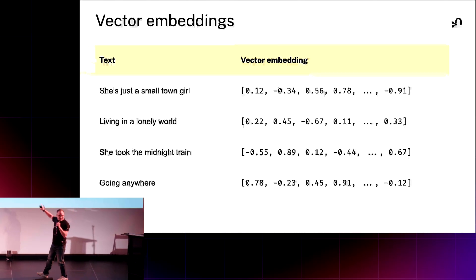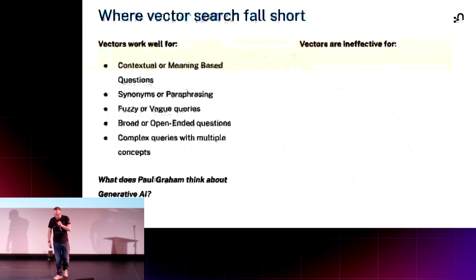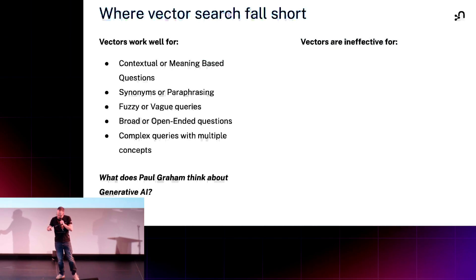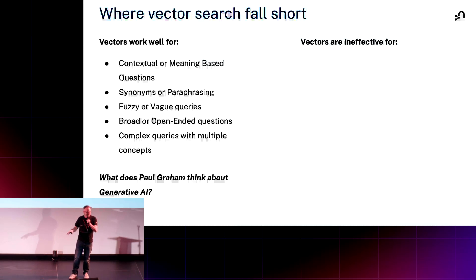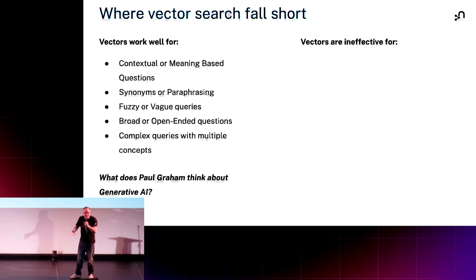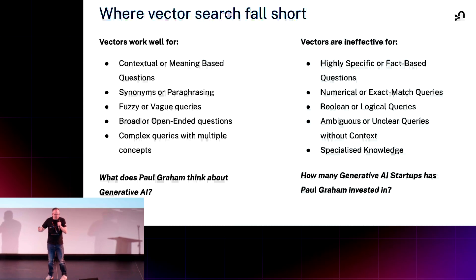We can use vector embeddings to represent text. Vectors work incredibly well for the hard stuff: fuzzy matching, vague searching — the stuff that 20 years ago, 10 years ago, even 5 years ago was really hard and is still hard today. But they work less well for things like highly specific fact-based questions and numerical calculations.